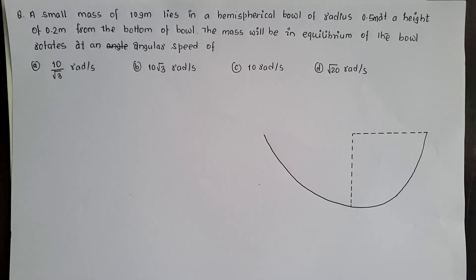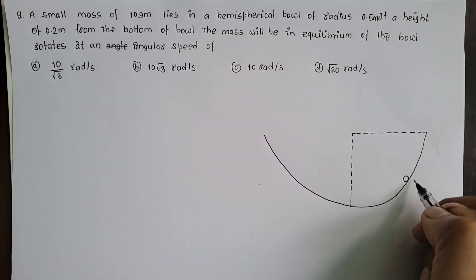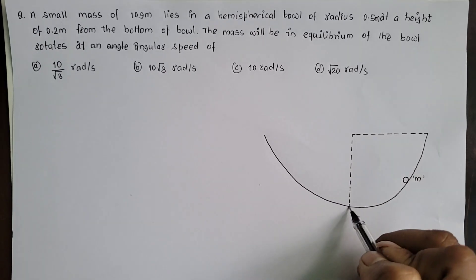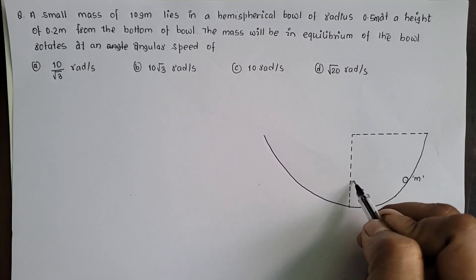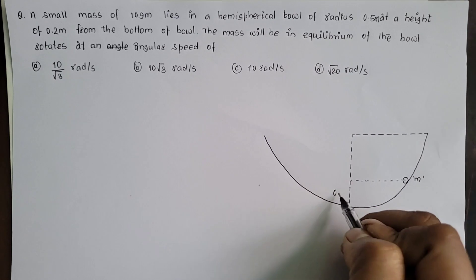4 option liyakuchu. Question ma diyakuchu: a small mass of 10 gram, suppose gara a small mass m, placed garae gusa bowl ma, bottom of the bowl dhekhi 0.2 meter at a height from the bottom of the bowl. Josko value dhegusa 0.2 meter.